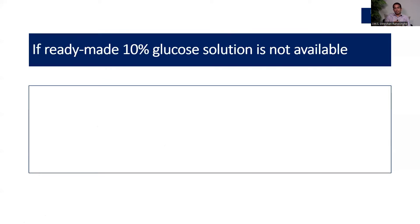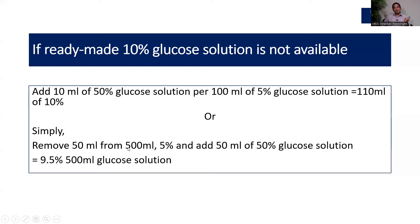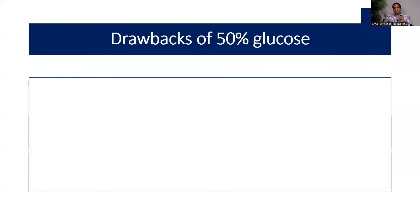If 10% dextrose is unavailable, you can make it: add 10 mL of 50% glucose solution to 100 mL of 5% glucose to create approximately 110 mL of 10% glucose. Alternatively, remove 50 mL from a 500 mL bag of 5% dextrose and add 50 mL of 50% glucose to get 500 mL of approximately 9.5% — nearly 10% glucose — which can be used for boluses or infusion.